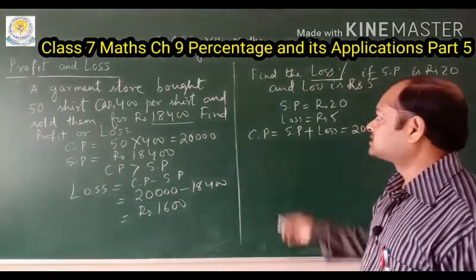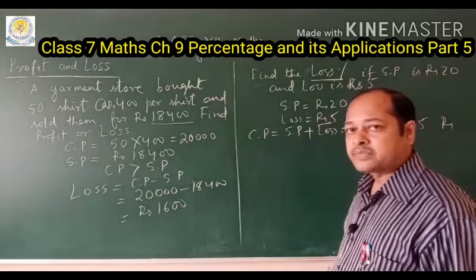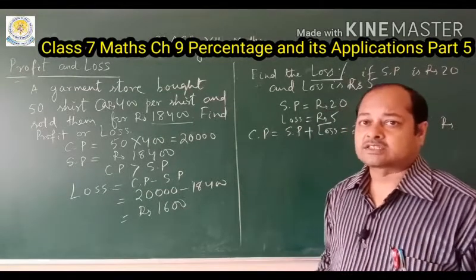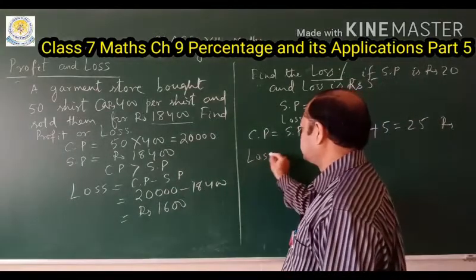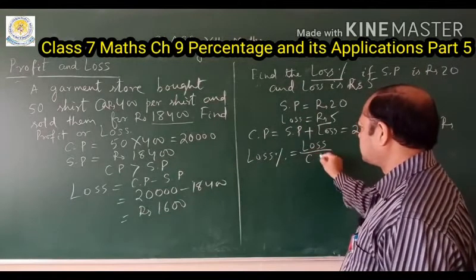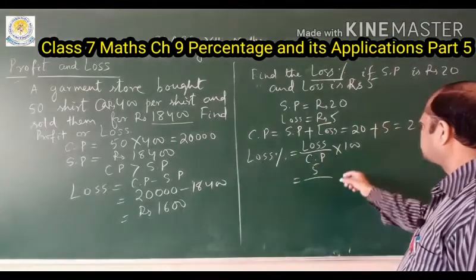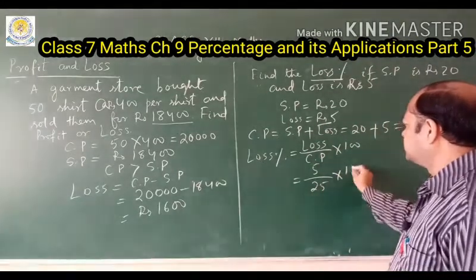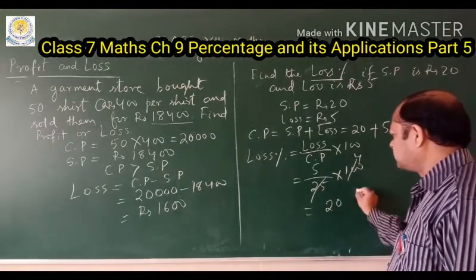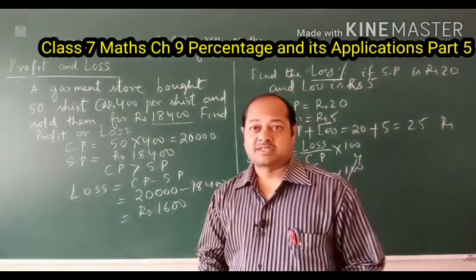Now find the loss percentage. Profit and loss are always calculated upon the cost price. Loss Percentage = (Loss ÷ Cost Price) × 100 = (5 ÷ 25) × 100 = 20%. So the loss percentage is 20%. I hope you understand all the questions solved today.